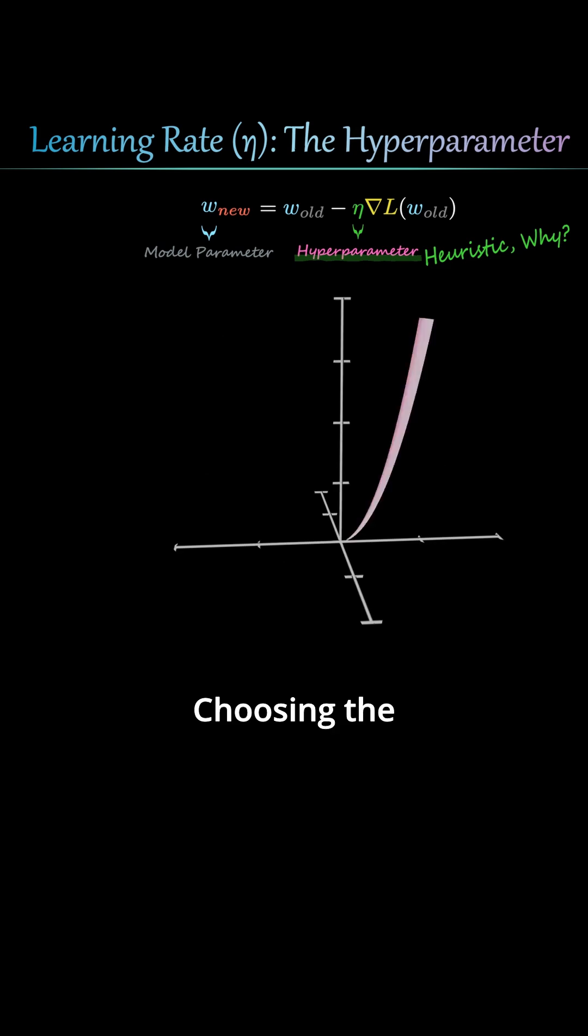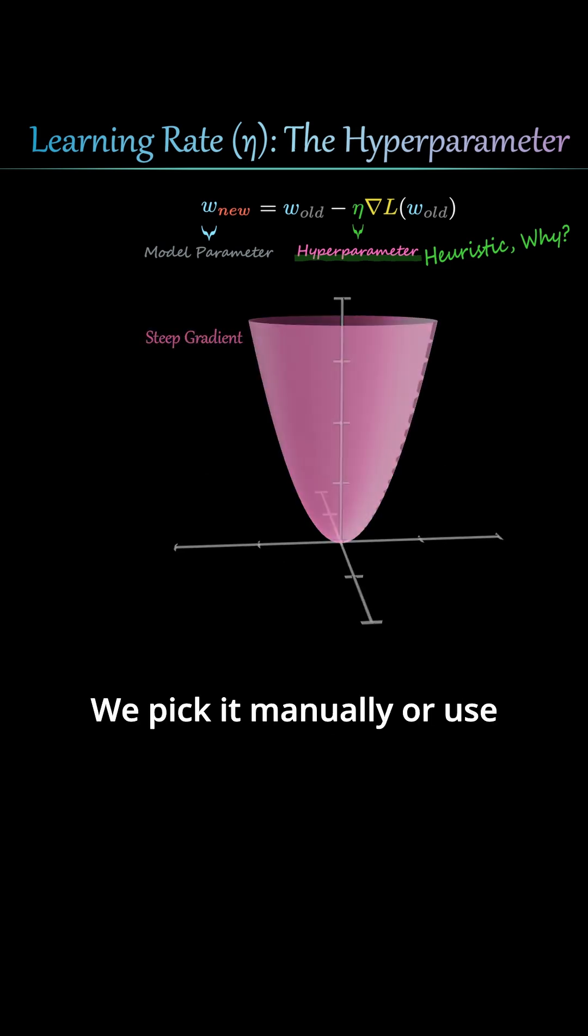Unfortunately, there's no universal answer. Choosing the learning rate is heuristic. We pick it manually or use automated search methods.